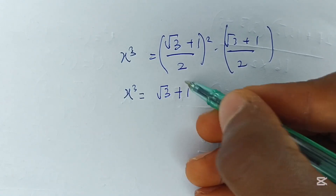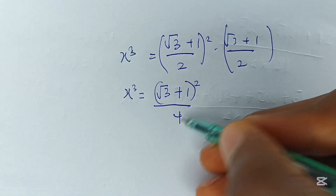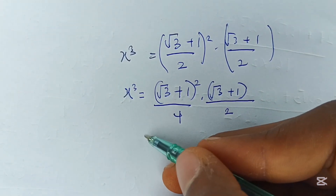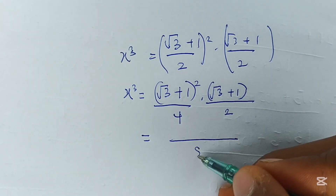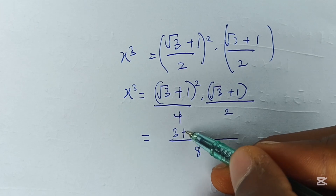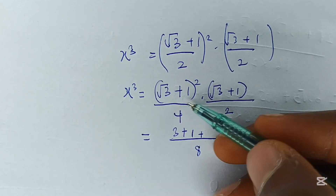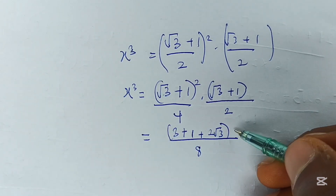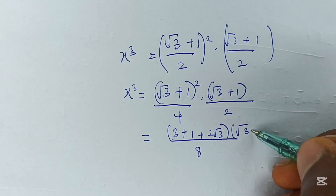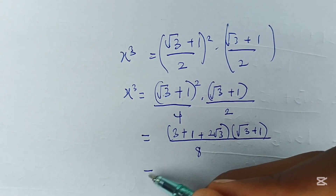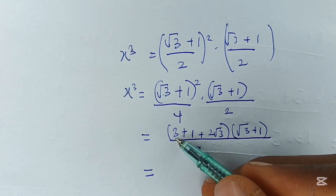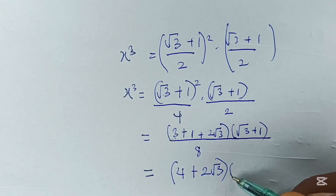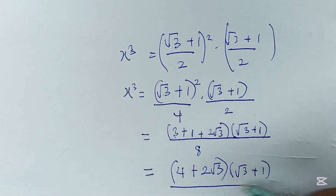x³ equals (√3 + 1)²/4 times (√3 + 1)/2. Expanding (√3 + 1)²: √3 × √3 = 3, 1² = 1, and 2 × √3 × 1 = 2√3. So (√3 + 1)² = 4 + 2√3. This gives us (4 + 2√3)(√3 + 1) divided by 8.